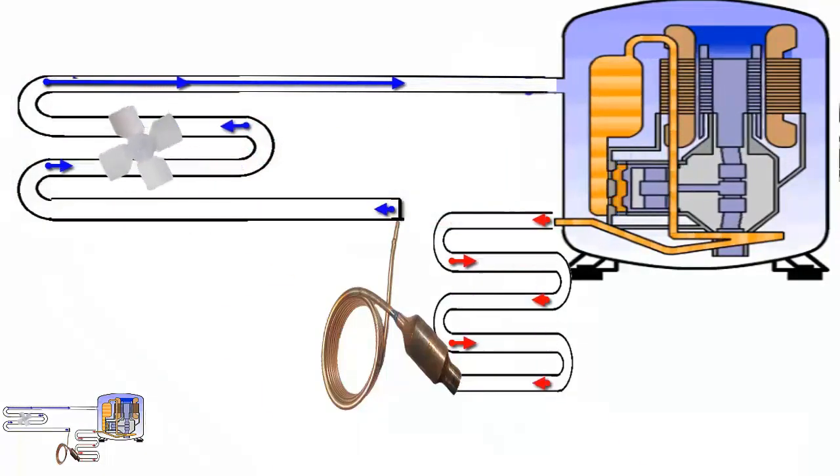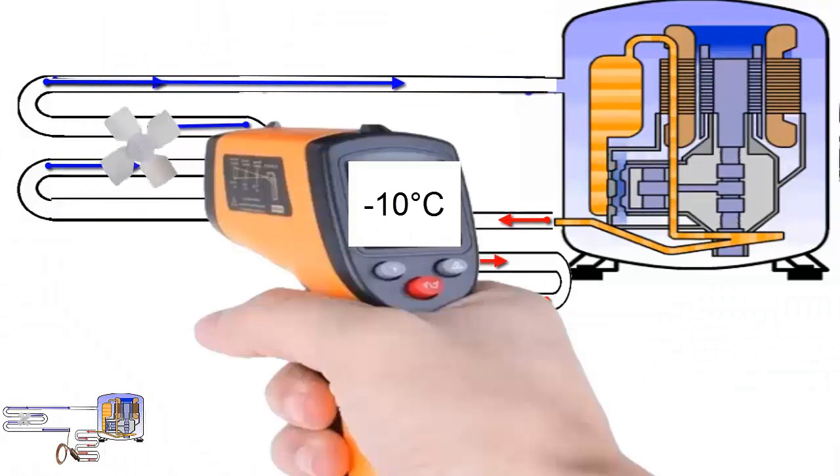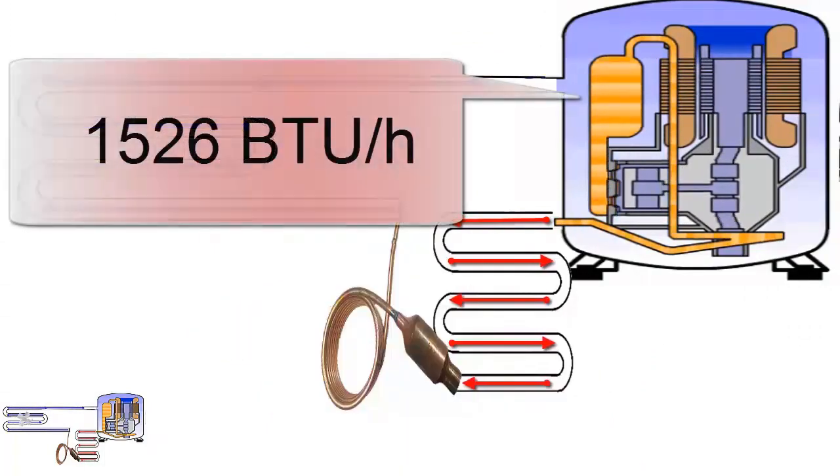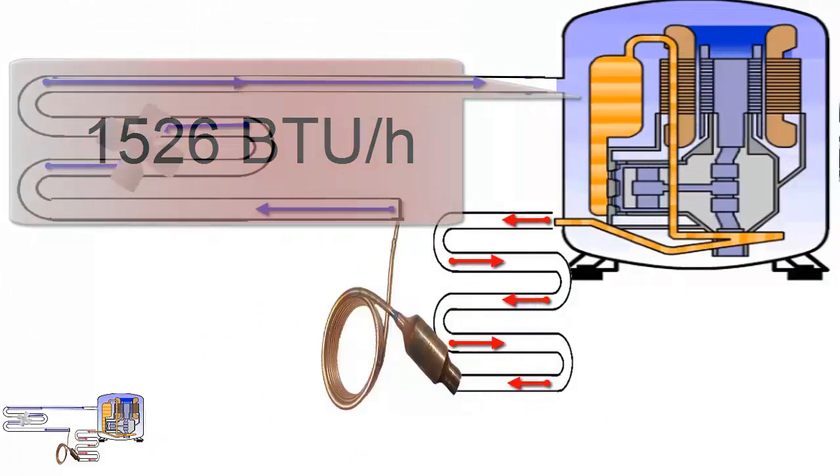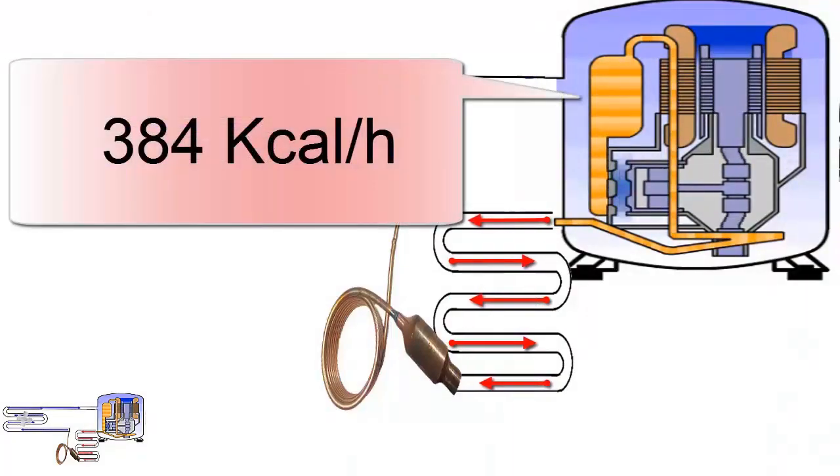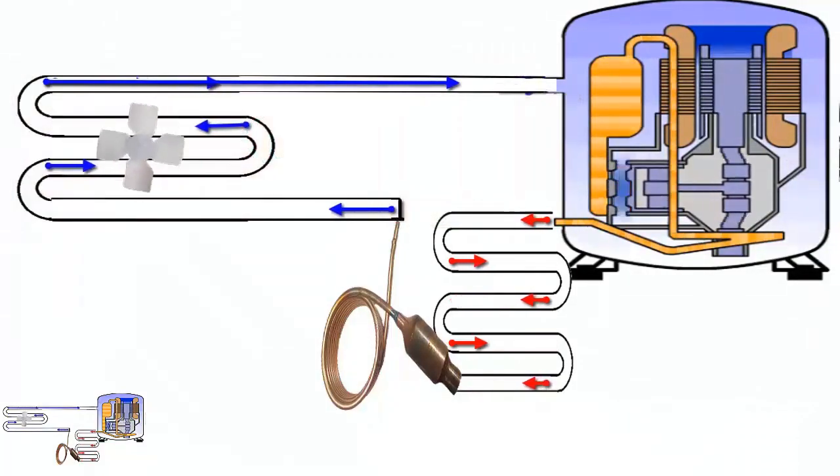At minus 10 degrees Celsius, equivalent to 14 degrees Fahrenheit, the cooling capacity is 1526 BTU per hour, equivalent to 384 kcal per hour.